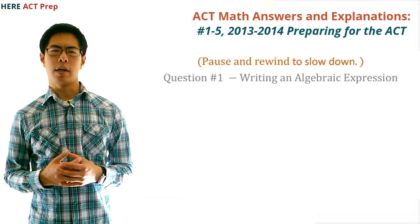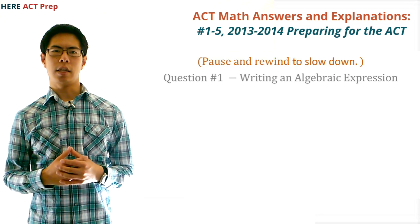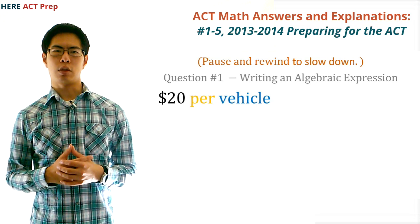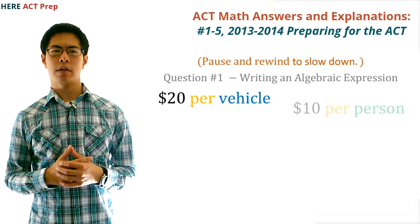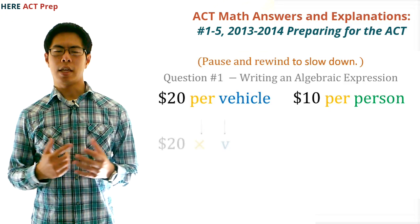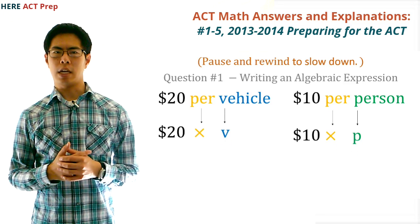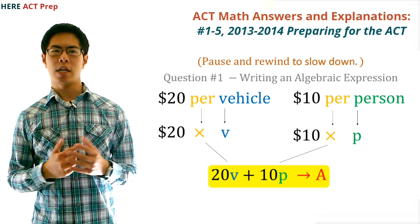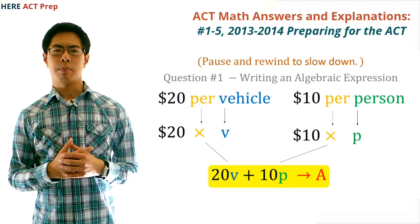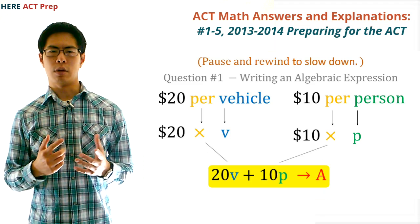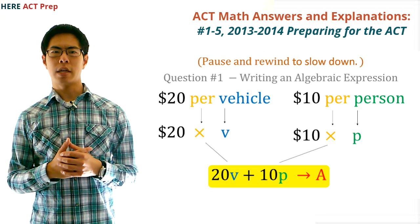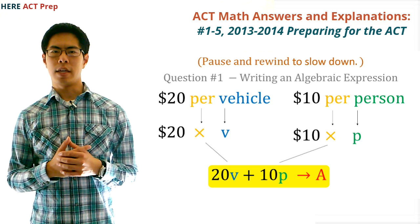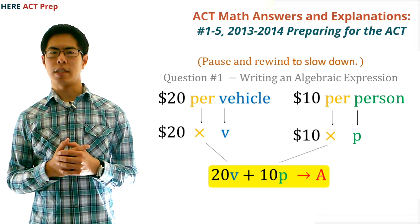Question number one. The concept this question tests is writing an algebraic expression. We're told that the weekly fee is $20 per vehicle and $10 per person, and that last year there were V vehicles and P persons. So the weekly fees for last year will be 20 times V plus 10 times P, since the word 'per' tells us that we need to multiply the dollar amount by the number of vehicles or people. The answer is A, or 20V + 10P.